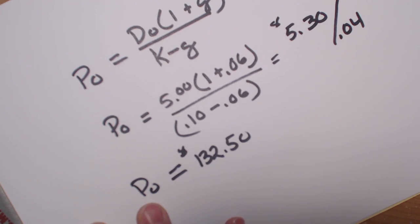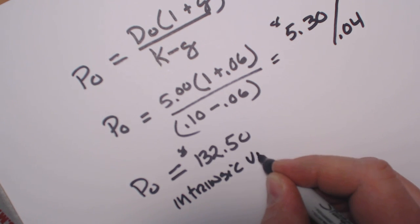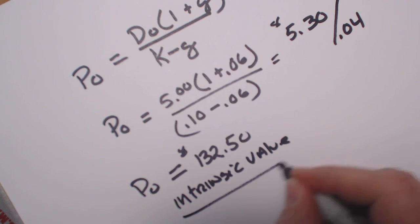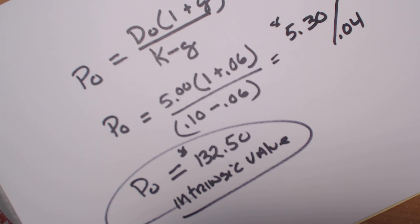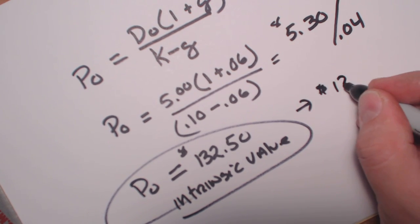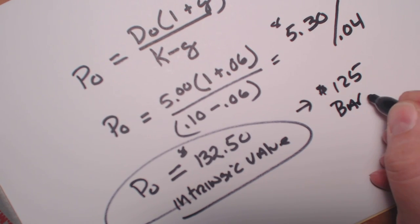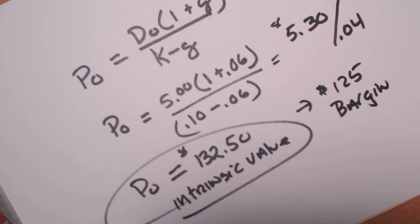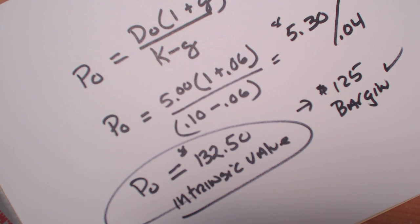So what is the intrinsic value? The intrinsic value of the Basketball stock is $132.50. Is it a bargain? If it's trading at $125, this becomes a bargain. So the answer is yes. Thank you, have a good day.